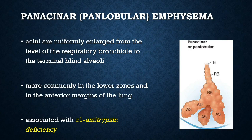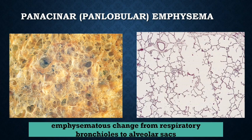Panasinar, also called panlobular emphysema, involves uniform enlargement of the acini from the level of the respiratory bronchioles to the terminal alveoli. In contrast to centriasinar emphysema, panasinar emphysema tends to occur more commonly in the lower zones and anterior margins of the lung, and is usually most severe at the bases. This type of emphysema is associated with alpha-1-antitrypsin deficiency. Microscopically, there is emphysematous change from the respiratory bronchioles to the alveolar sacs.